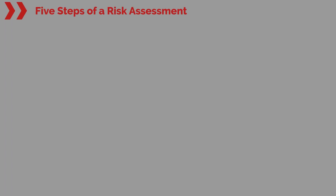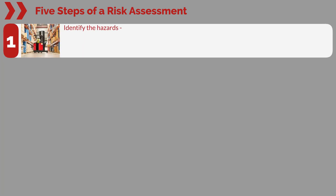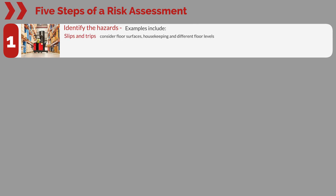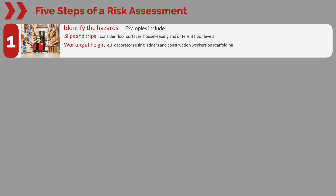Five steps of a risk assessment. Step one: identify the hazards. Examples include slips and trips — consider floor surfaces, housekeeping and different floor levels. Working at height, for example, decorators using ladders and construction workers on scaffolding.